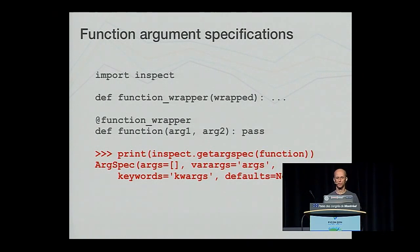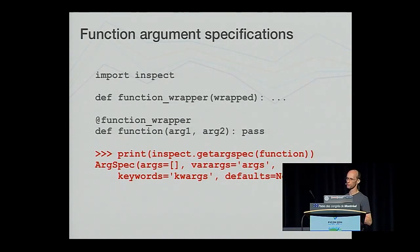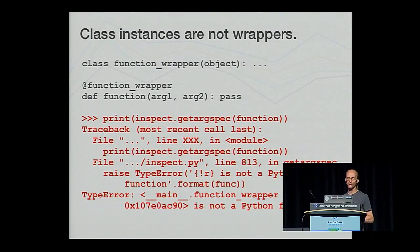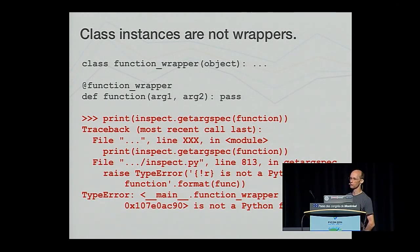We've managed to fix up things so that the function name and any documentation string is correct. But what if we want to query the argument specification? This also fails — instead of returning the argument specification for the wrapped function, it returns that of the wrapper. In the case of using a function closure, this is the nested function. The decorator is therefore not what we call signature preserving. A worse situation occurs with the class wrapper — we get an exception complaining that the wrapped function isn't actually a function, making it impossible to derive an argument specification at all, even though the wrapped function is still callable.